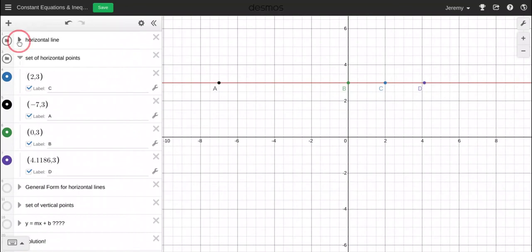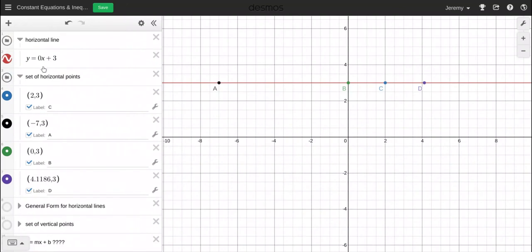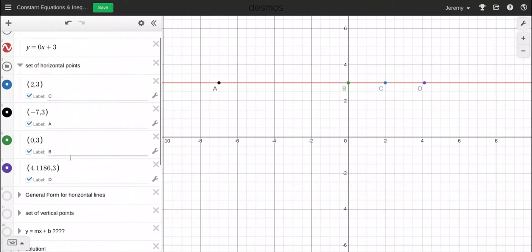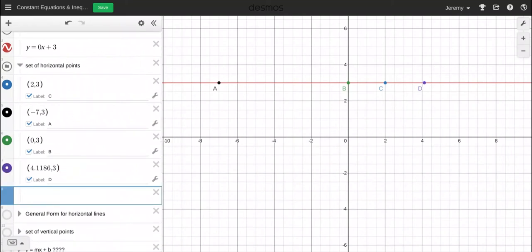So we can write the horizontal line like this, but zero times x is zero, and zero plus 3 is 3. So therefore, we could just write y equals 3, and that would give us the same points. Let me do that. y equals 3.